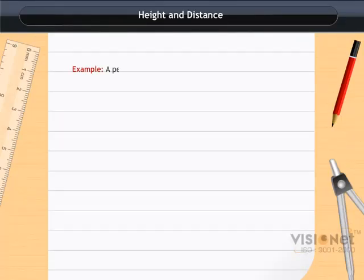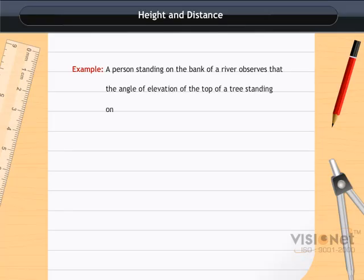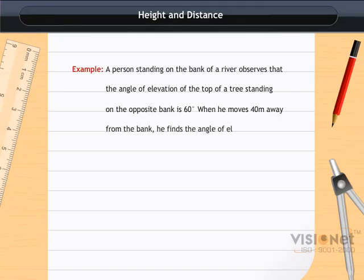The angle of elevation of the top of a tree standing on the opposite bank is 60 degree. When he moves 40 meter away from the bank, he finds the angle of elevation to be 30 degree. Find the height of the tree and the width of the river.